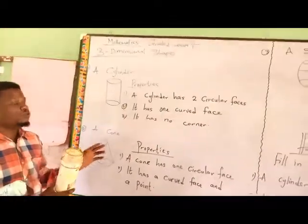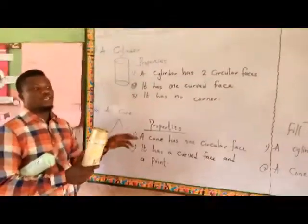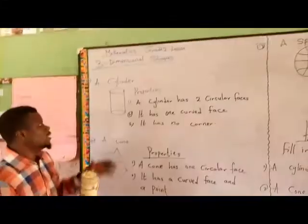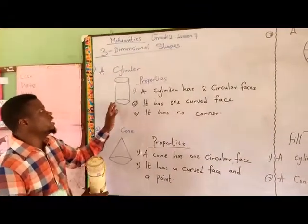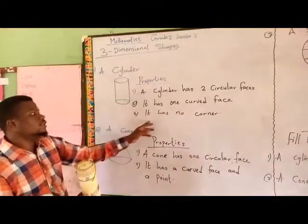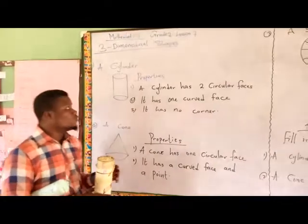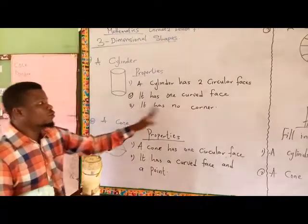And it has no corner. Do remember I have explained square corners for you in two-dimensional shapes. You cannot form any square corner in a cylinder. That is why we say it has no corners.